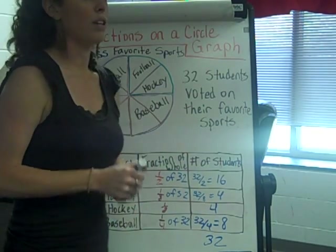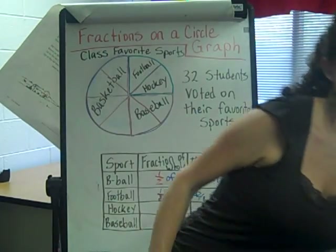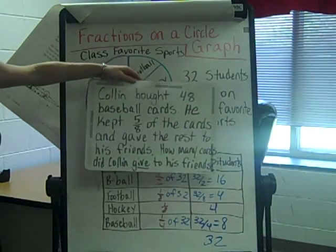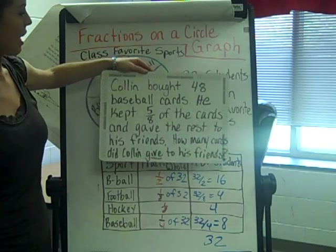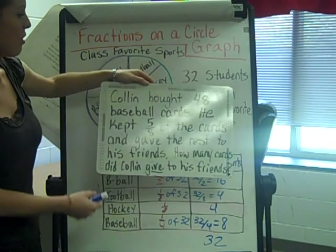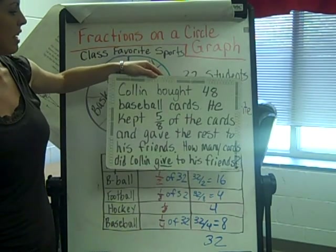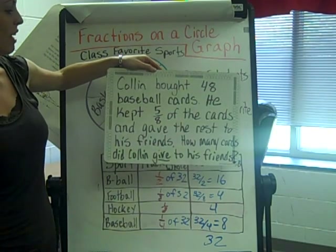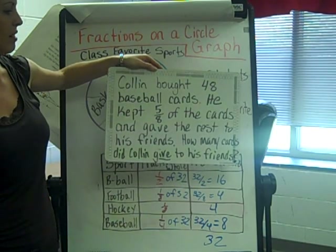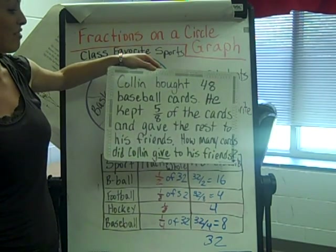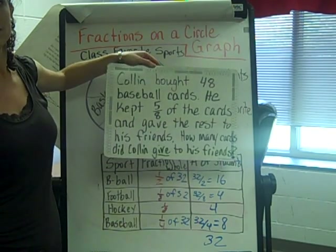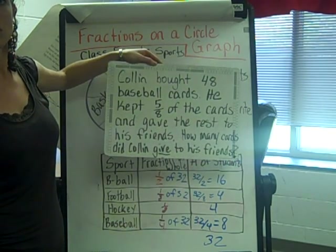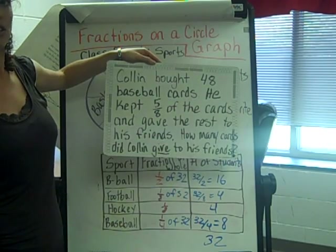For those of you that want to do the bonus question: you can earn a Steck Buck tomorrow if you get it correct. Colin bought forty-eight baseball cards. He kept five eighths of the cards and gave the rest to his friends. How many cards did Colin give to his friends? Bring back the answer with your work shown to earn a Steck Buck.